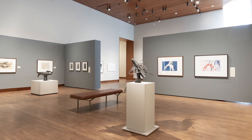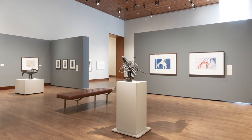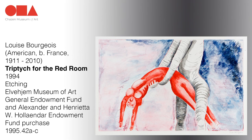Louise Bourgeois was heavily inspired by the childhood trauma of her father's infidelity during her mother's terminal illness. She made this triptych to accompany two sculptural installations called Red Room Child and Red Room Parents, representing her relationship with her parents. Although the overall configuration remains the same, Bourgeois clarifies her vision between the preparatory study and the final triptych.